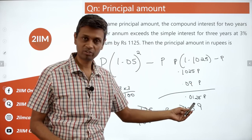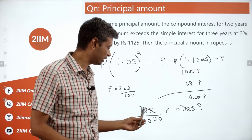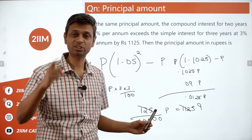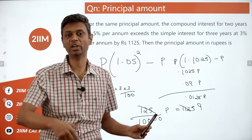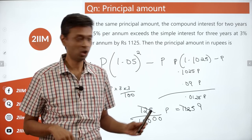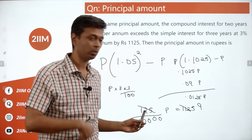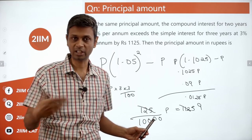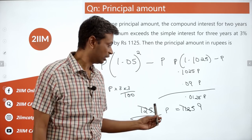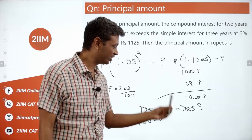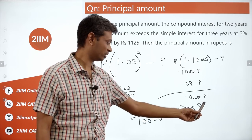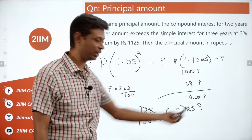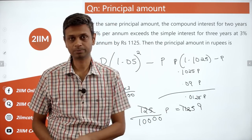Knowing 1.05² = 1.1025 makes life easy. 125×9 = 1125, so the multiplier is 9, giving principal = 9×10,000 = 90,000 rupees.